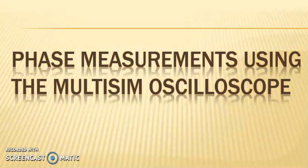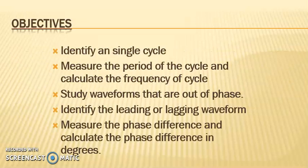In this video we will take a look at phase measurements using the multi-SIM oscilloscope. Our objectives are to identify a single cycle, measure the period and calculate the frequency. We want to study waveforms that are out of phase, identify which waveform is leading and which is lagging, and measure the phase difference and calculate it in degrees. Along the way we'll review some formulas and basic measurements.